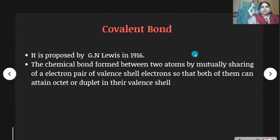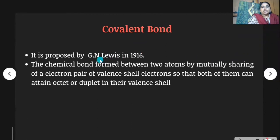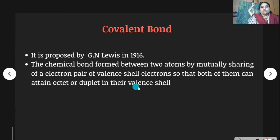Next, covalent bond. The covalent bond was proposed by G.N. Lewis in 1916. The chemical bond formed between two atoms by mutually sharing an electron pair of valence electrons, so that both of them can attain octet or duplet in their valence shell, is called a covalent bond.